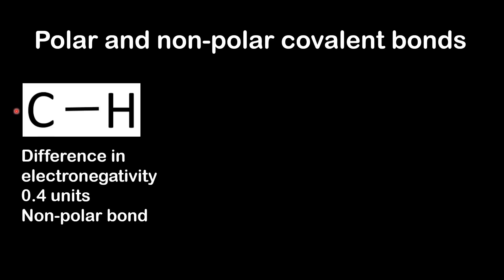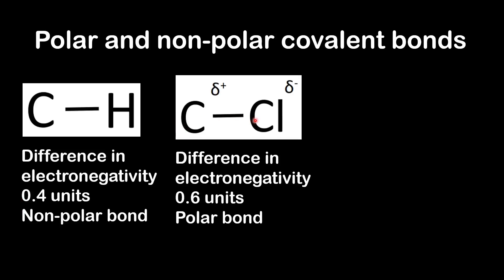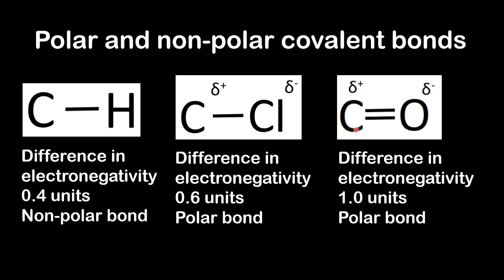Finally, we look at some more examples of polar and nonpolar bonds, this time with carbon. The first is the carbon to hydrogen bond: the difference in electronegativity is 0.4 units, therefore it is a nonpolar bond. The next example is the carbon to chlorine bond: the difference in electronegativity is 0.6 units, therefore it is a polar bond. The chlorine has the negative dipole and the carbon has the positive dipole. The final example is the carbon to oxygen double bond.